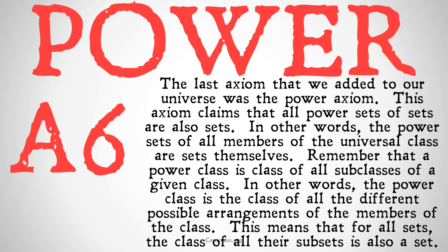The last axiom we've added to our universe is the power axiom. This axiom claims that all power sets of sets are also sets. In other words, the power sets of all members of the universal class are sets themselves. Remember that a power class is a class of all subclasses of a given class — in other words, the power class is the class of all the different possible arrangements of the members of that class. If you didn't understand, don't worry — go check out our video on power sets and power classes; we have some great examples in there and go into this in a lot more detail. But this means that for all sets, the class of all their subsets is also a set.